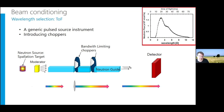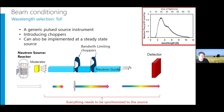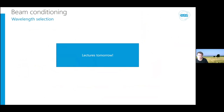You may also need to add a T0 chopper, especially without a curved guide, synchronized to the source. As a side note: you can also create a pulsed neutron beam at a reactor by adding a chopper that pulses the beam periodically — so pulsed beams are not exclusive to spallation sources. There are more lectures on all of this tomorrow.